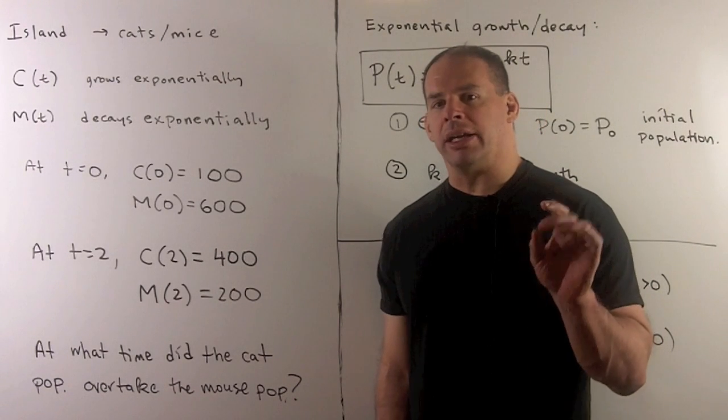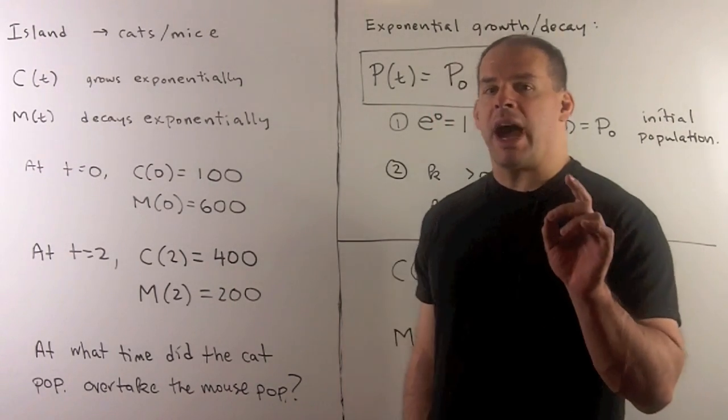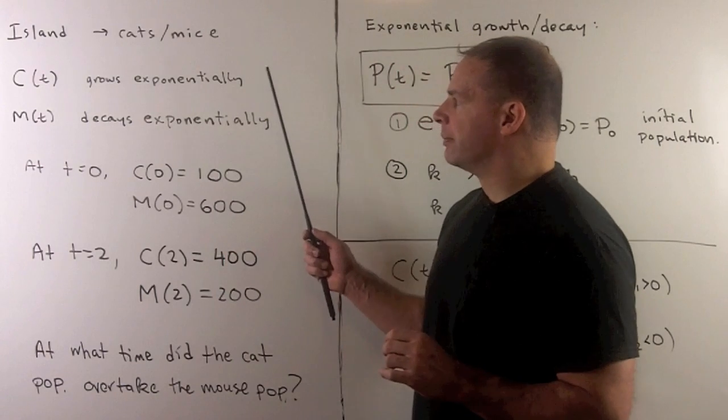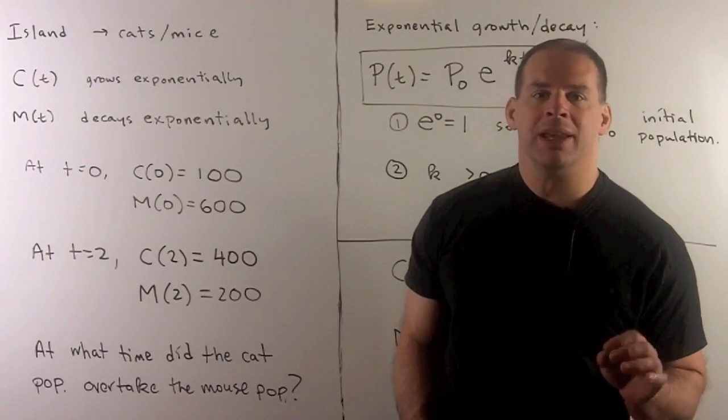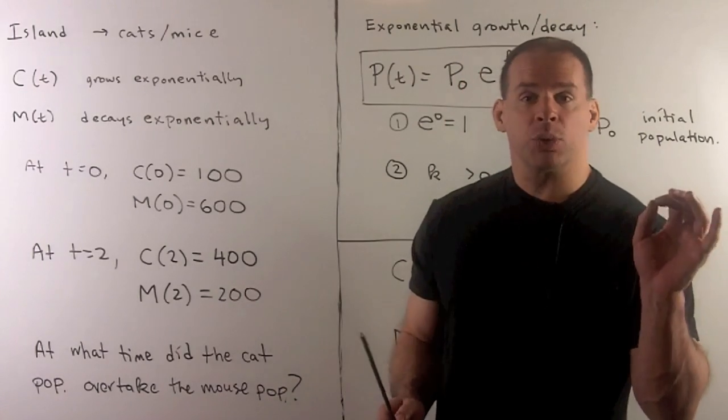Here's an example of modeling exponential population growth. We have an island with two populations, one of cats and one of mice. The cat population grows exponentially. The mouse population decays exponentially. So the cats are winning here.